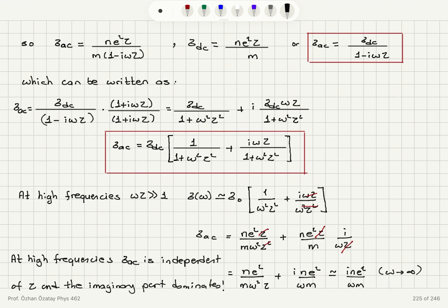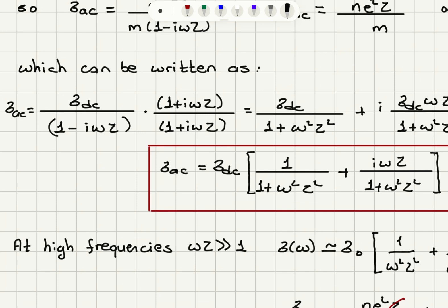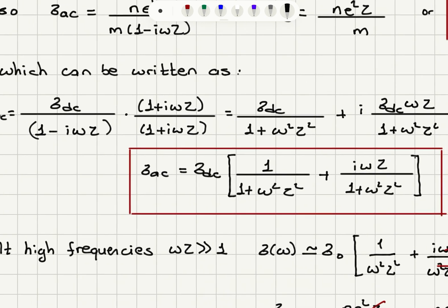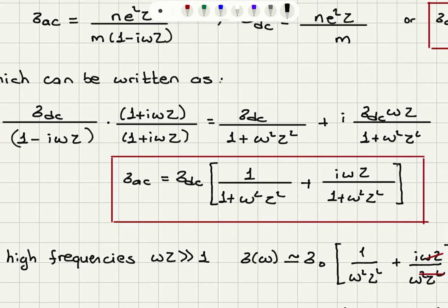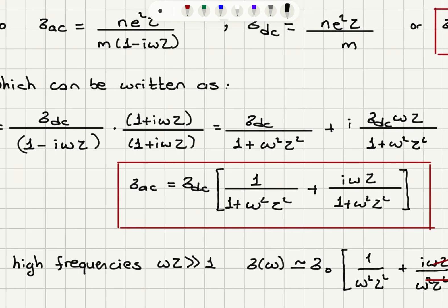We can play with this expression by multiplying top and bottom by (1 plus i omega tau), so that the denominator becomes 1 plus omega squared tau squared. In the numerator, we will have sigma_DC times (1 plus i omega tau), so taking sigma_DC as a factor we obtain: sigma_DC times [1 over (1 plus omega squared tau squared) plus i omega tau divided by (1 plus omega squared tau squared)].